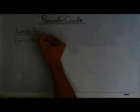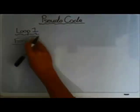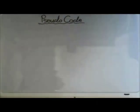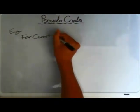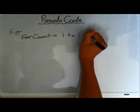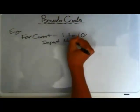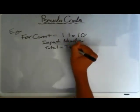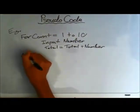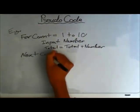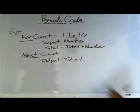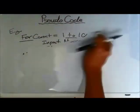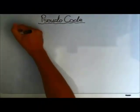Loop number one: FOR TO NEXT. This is what a FOR TO NEXT loop looks like. For count equals one to ten, the user inputs a number, the code takes the number and adds it to total, and then the code outputs the total.